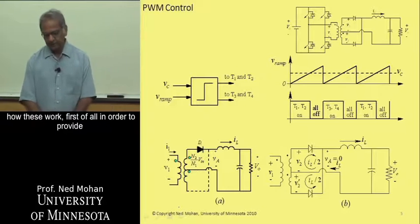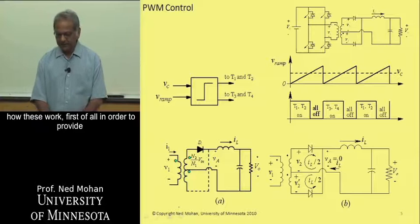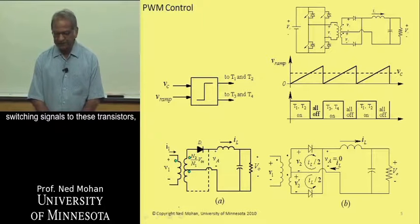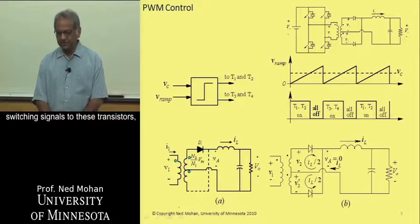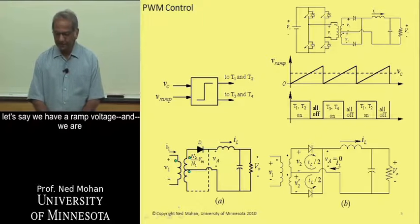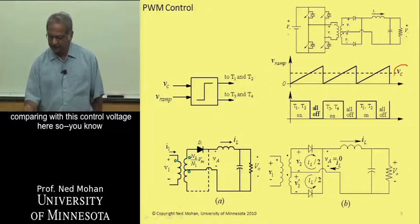So let's see how these work. First of all, in order to provide the switching signals to these transistors, let's say we have a ramp voltage. And we are comparing it with this control voltage here.